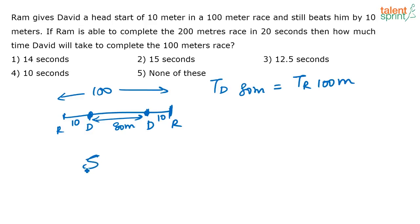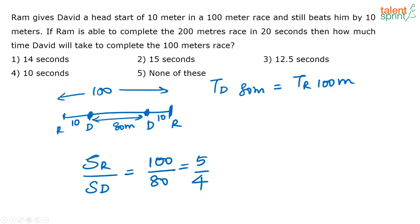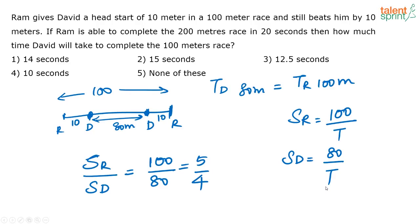So I can say the speed of Ram to the speed of David is equal to 100 divided by 80, or 5 by 4. Speed of Ram is the distance that he travels divided by the time that he takes — he is traveling 100 meters, and let's assume he is taking T seconds. Similarly, the speed of David is 80 meters divided by T seconds. If I compare the speed of both of them, T gets cancelled because T is the same. So speed of Ram to speed of David is 5 is to 4.